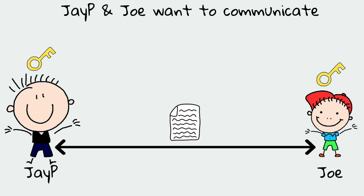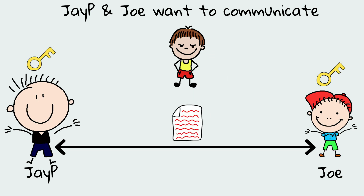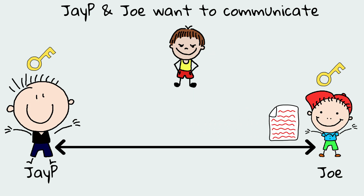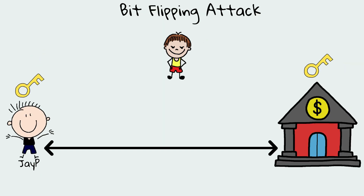However, that does not mean that a malicious Chatty cannot interfere with the message and change it, even though he does not understand it. For example, there is an attack known as a bit flipping attack. Let's have a bank transaction example to show how damaging this attack can be.